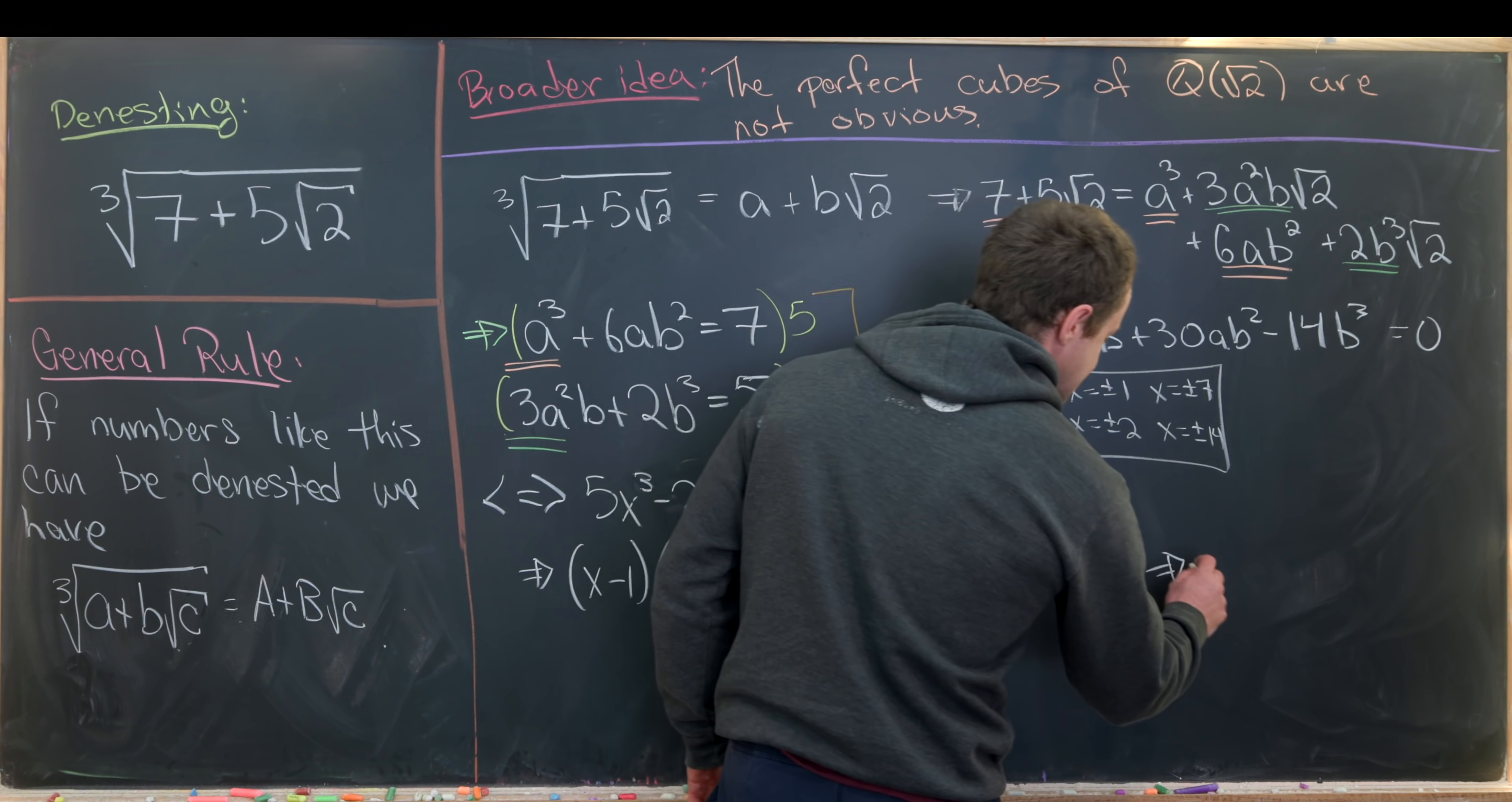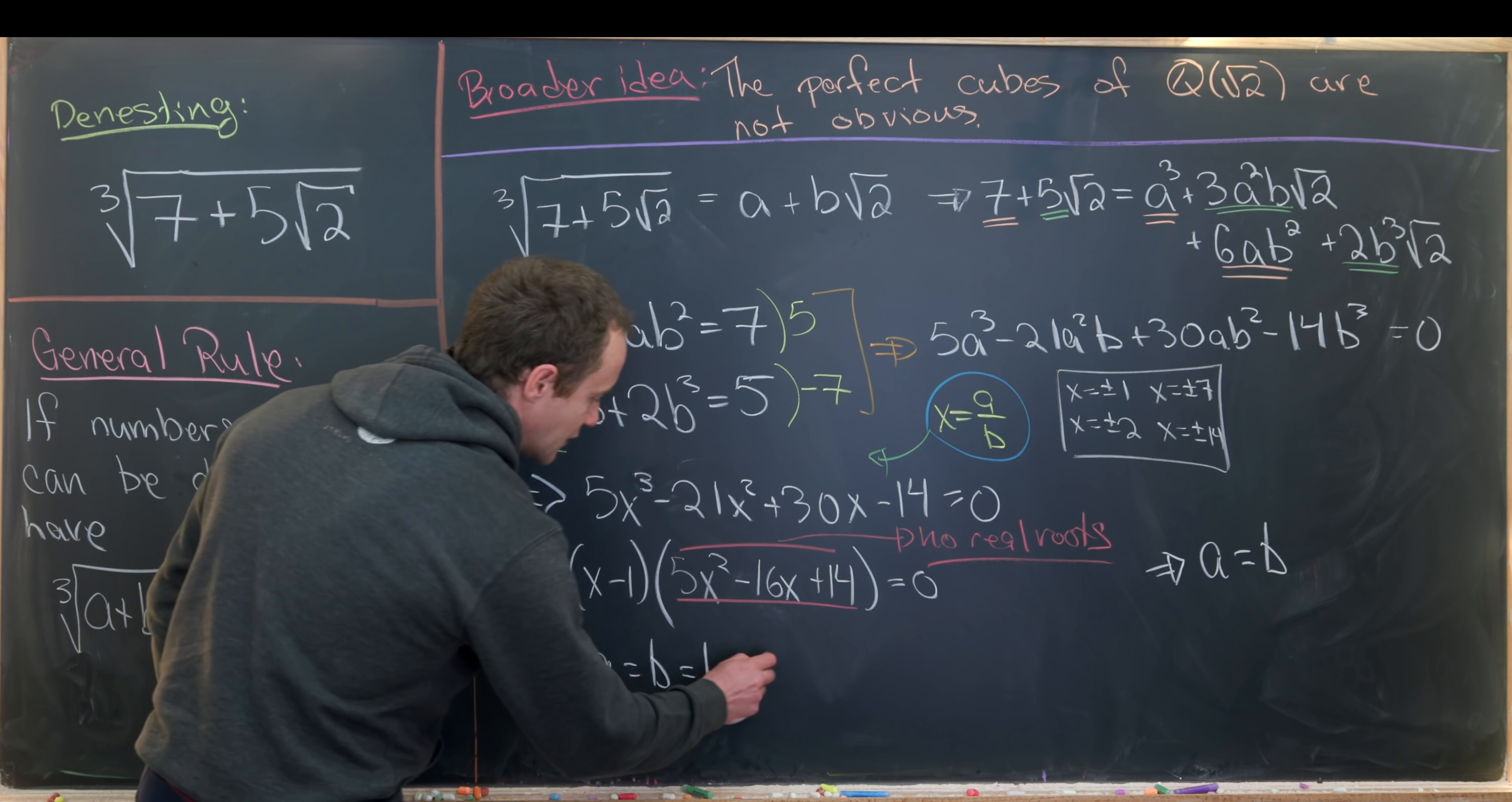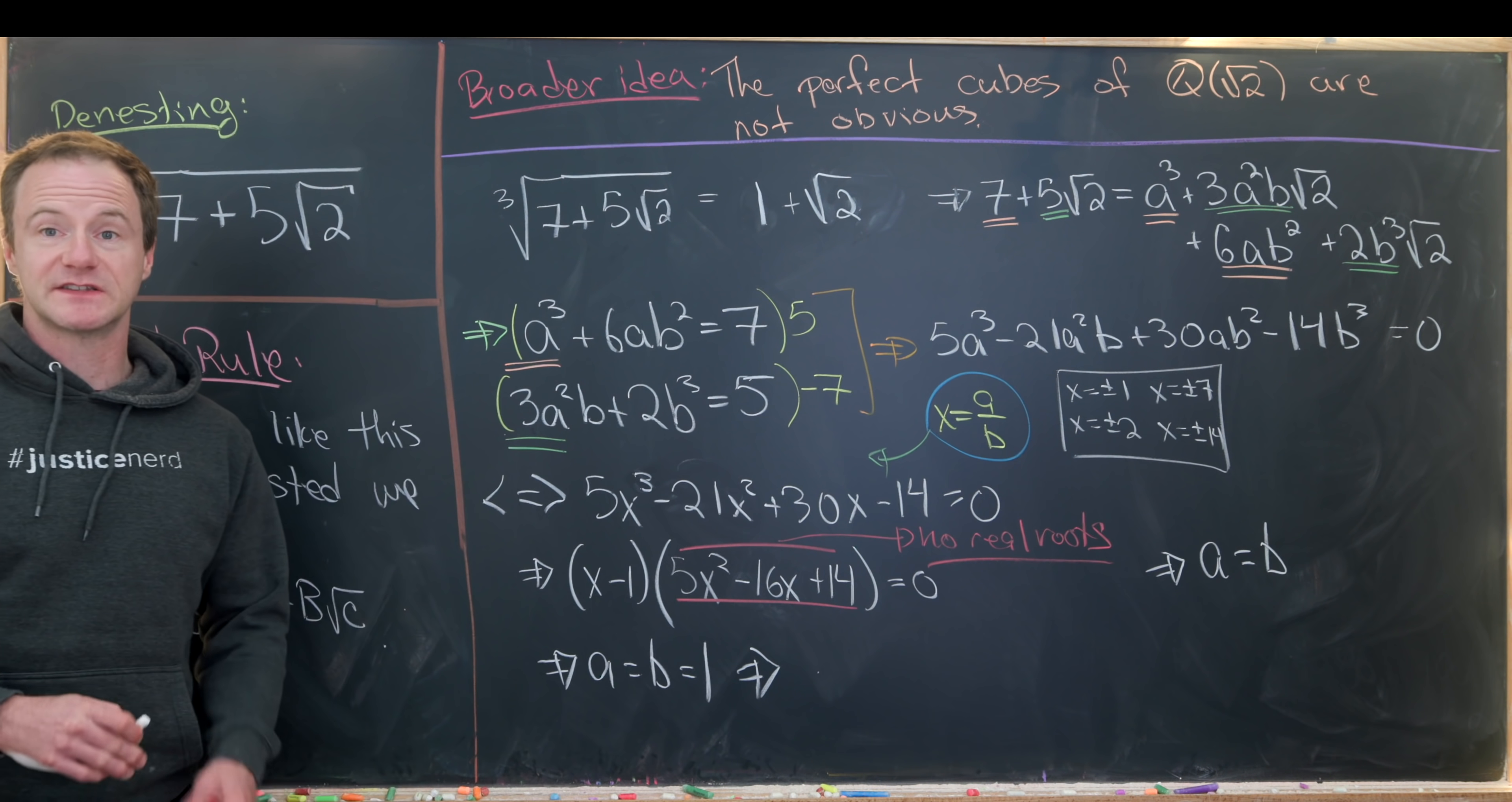But notice if x is equal to 1 we have a is equal to b. But now we can throw a is equal to b up into these two equations and we'll see that that very quickly gives us a equals b equals 1. Which means we can denest our original object which is the cube root of 7 plus 5 times the square root of 2 as 1 plus the square root of 2. And that's a good place to stop.